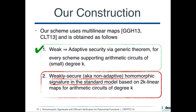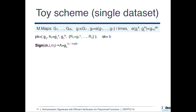In the next part I describe how to instantiate the homomorphic signature scheme in the standard model using 2K-linear maps. The public key is defined by a generator of the level-one group together with encodings of random exponents X and B, plus some additional group elements used to bind messages with positions. Specifically, Rᵢ is used to sign the message at position i.